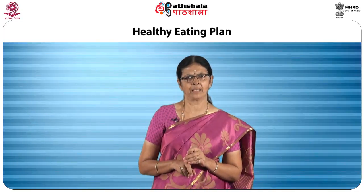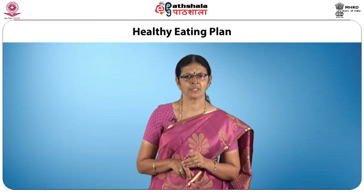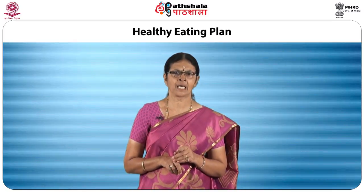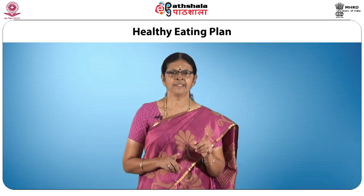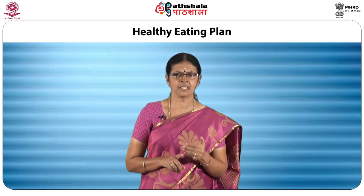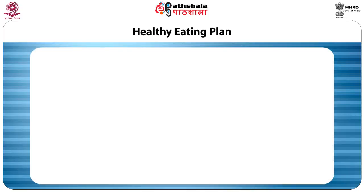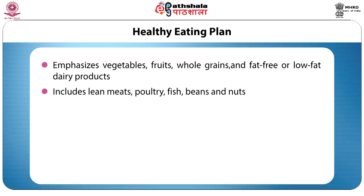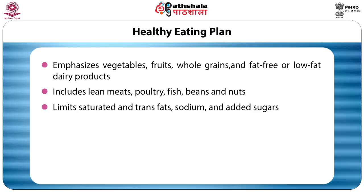Next, healthy eating plan. A healthy eating plan gives the body the nutrients it needs every day while staying within the daily calorie goal for weight loss. It will also lower the risk for heart disease and other health conditions. A healthy eating plan emphasizes vegetables, fruits, whole grains and fat-free or low-fat dairy products. Include lean meats, poultry and fish for non-vegetarians. For vegetarians, include beans and nuts. Limit saturated and trans fats, sodium and added sugars. Control portion size.